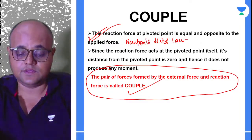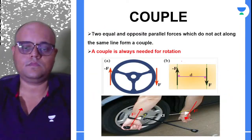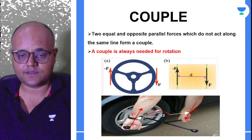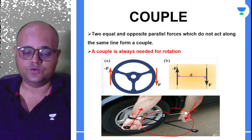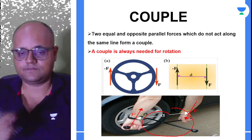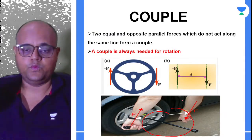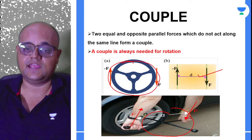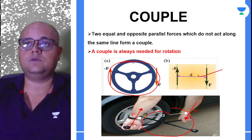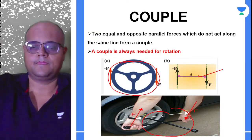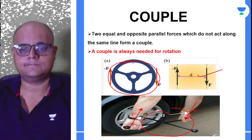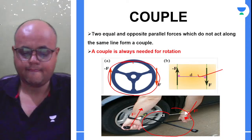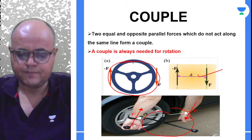A couple consists of two equal and opposite forces. Examples of couples include the tool used to open wheels and a steering wheel. These are examples where two equal and opposite forces create a turning effect.